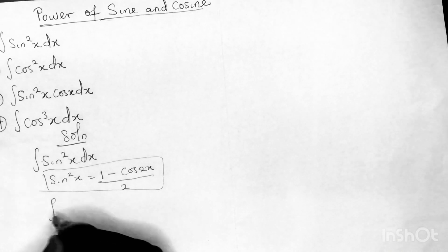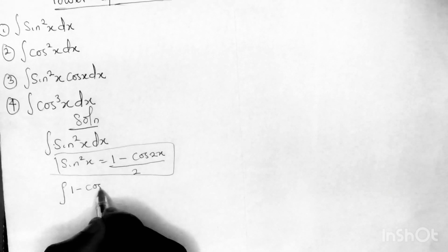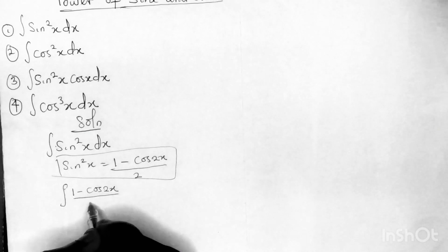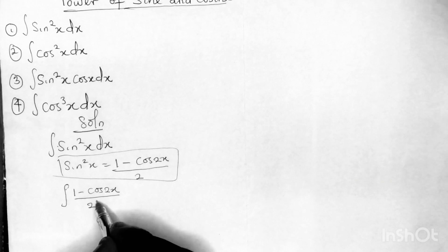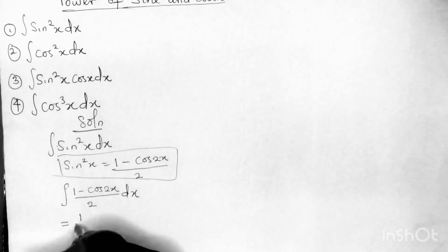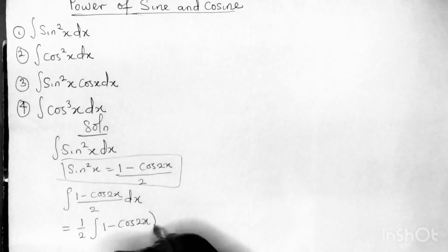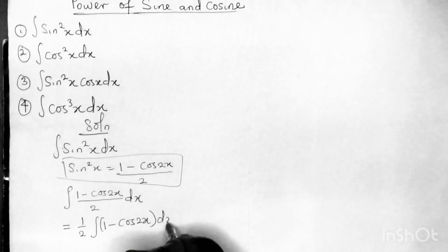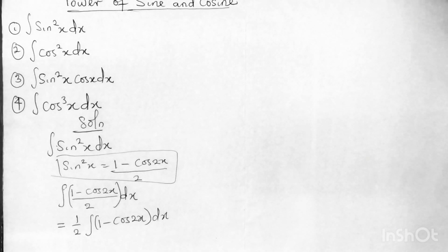So that means the integral will now become the integral of (1 minus cos 2x) over 2. Now I can take something outside, so I can write this as (1/2) times the integral of (1 minus cos 2x) dx — it is still the same thing.